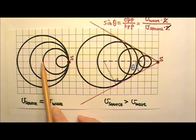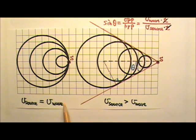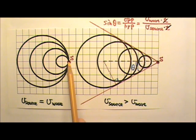If the wave source is moving at the same speed as the speed of the wave, then the wave forms will look like this. The source is here and all the wave fronts are over here as well.